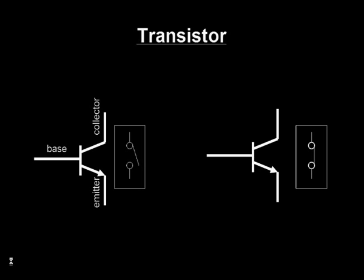When a small current flows into the base, the transistor switches on, allowing current to flow between the collector and the emitter contacts.